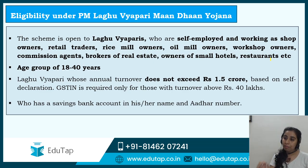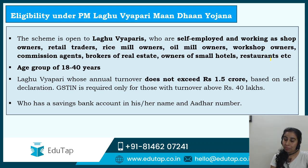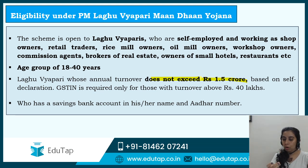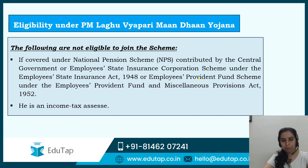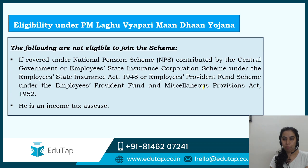The scheme is open to Vyaparis who are self-employed — shop owners, retail traders, rice mill owners, oil mill owners, small hotels, restaurants, etc. The age group is defined as 18 to 40, and the annual turnover must not exceed Rs. 1.5 crore. A savings bank account is also required. Importantly, people already under NPS or the National Pension Scheme are not eligible, and if you are an income tax assessee, you are also not going to be covered under it, as you are already under the government's regulatory net.